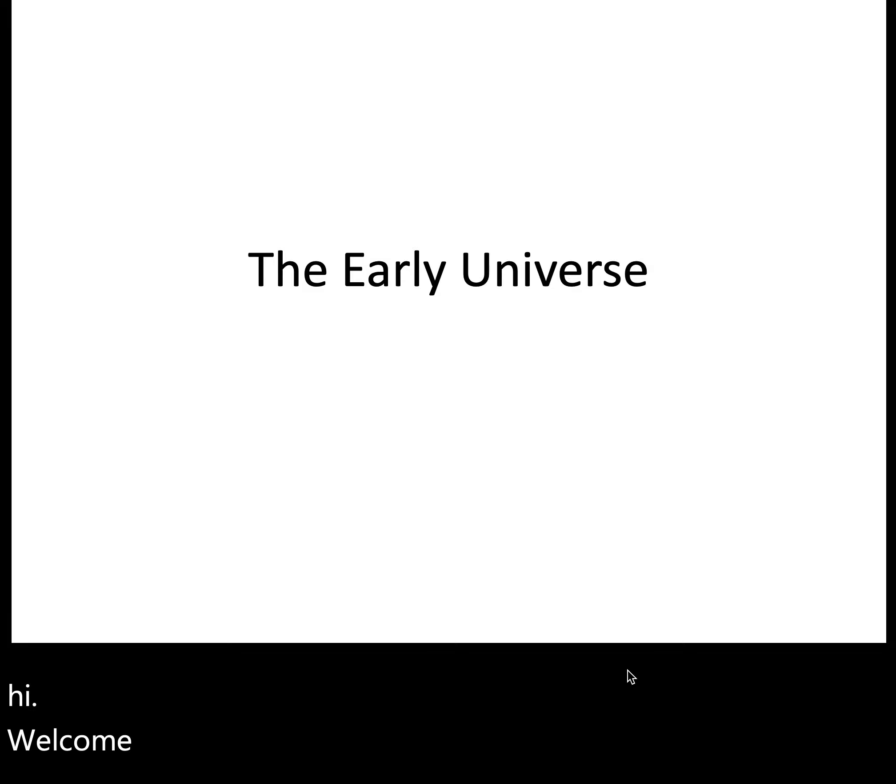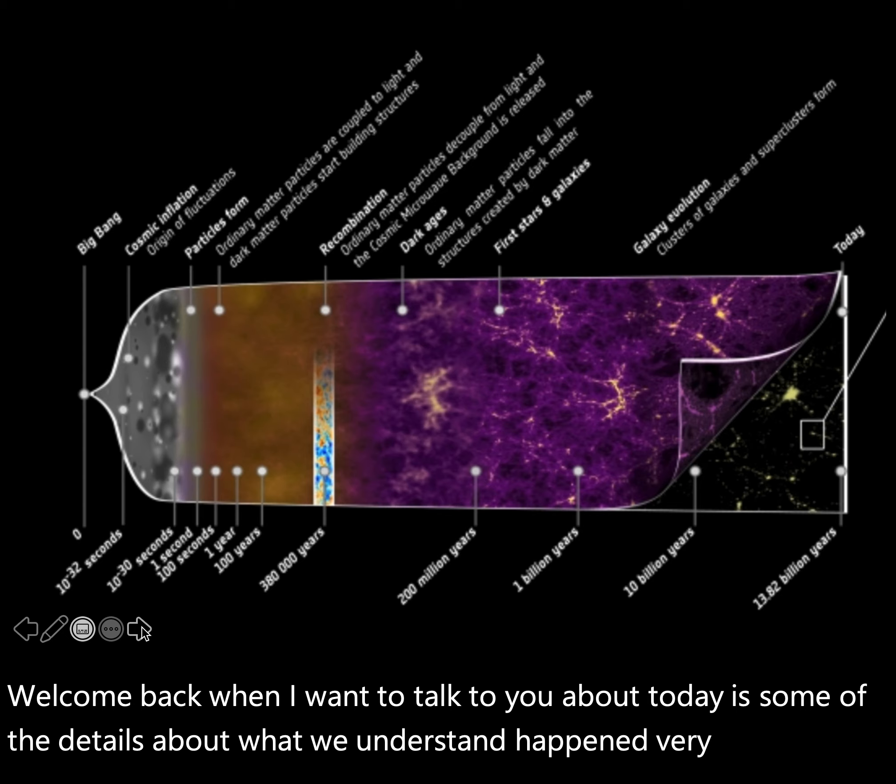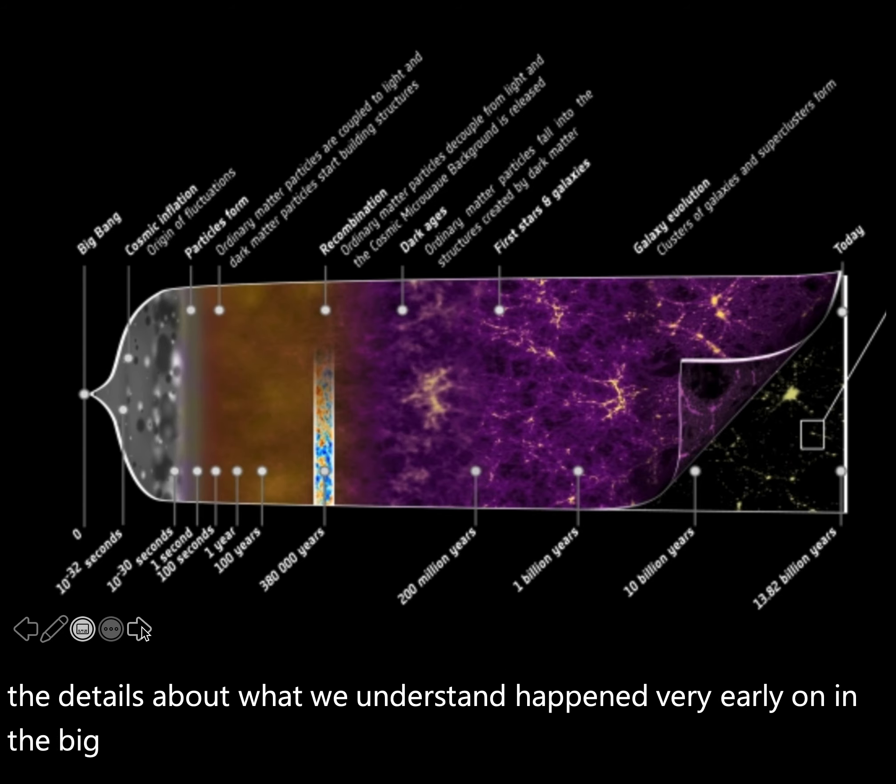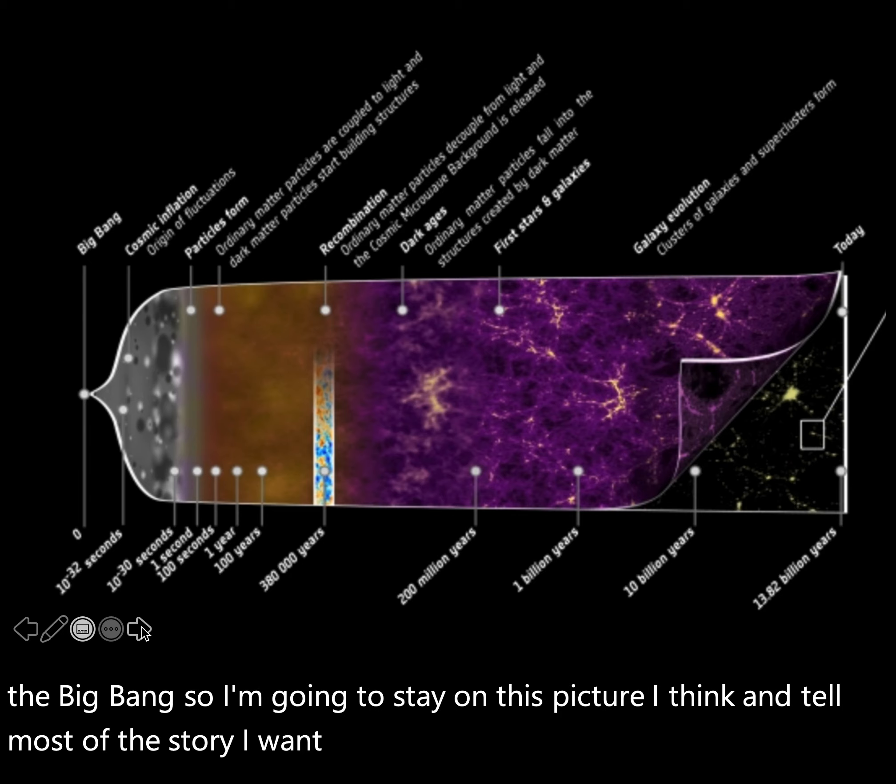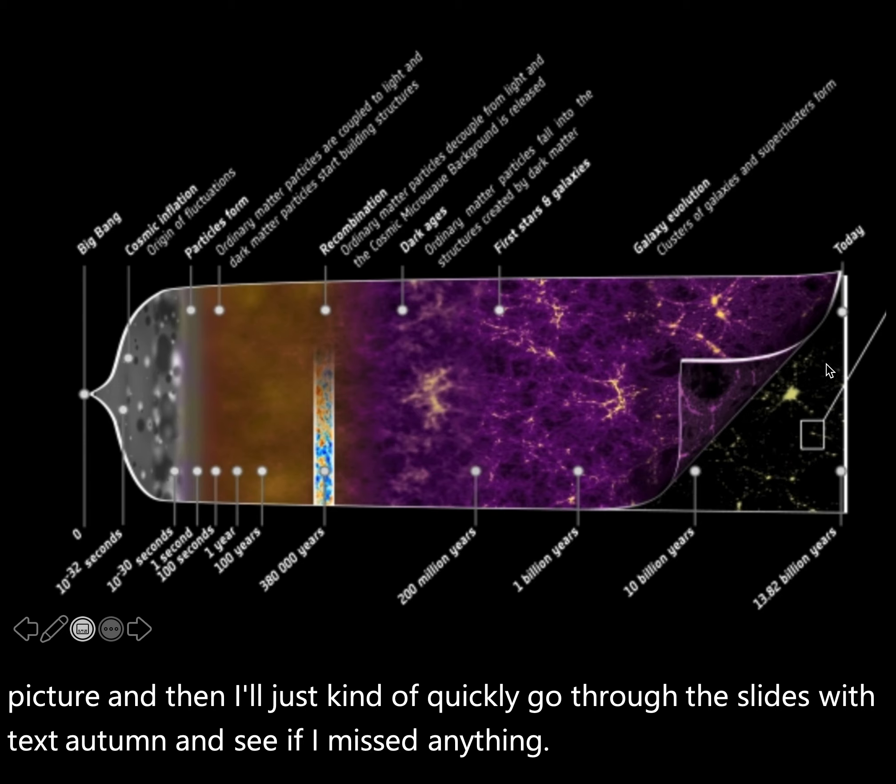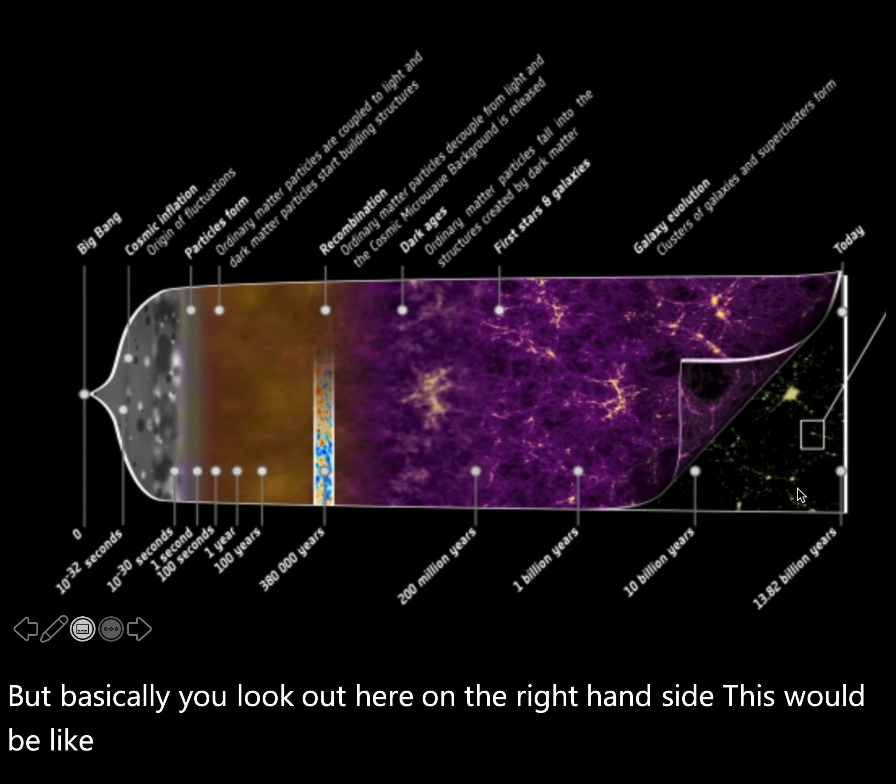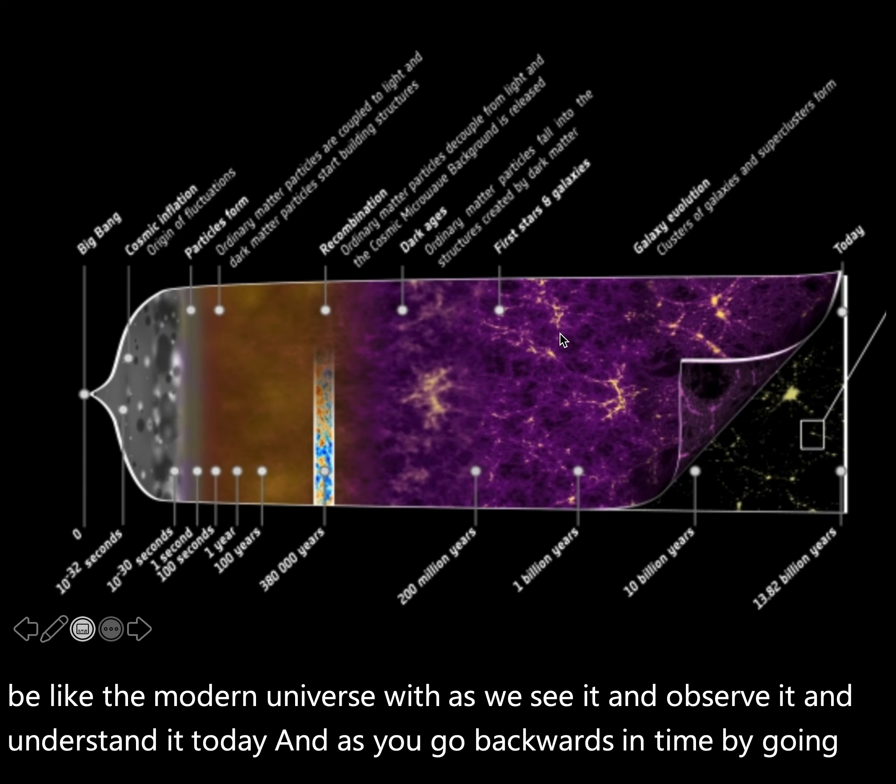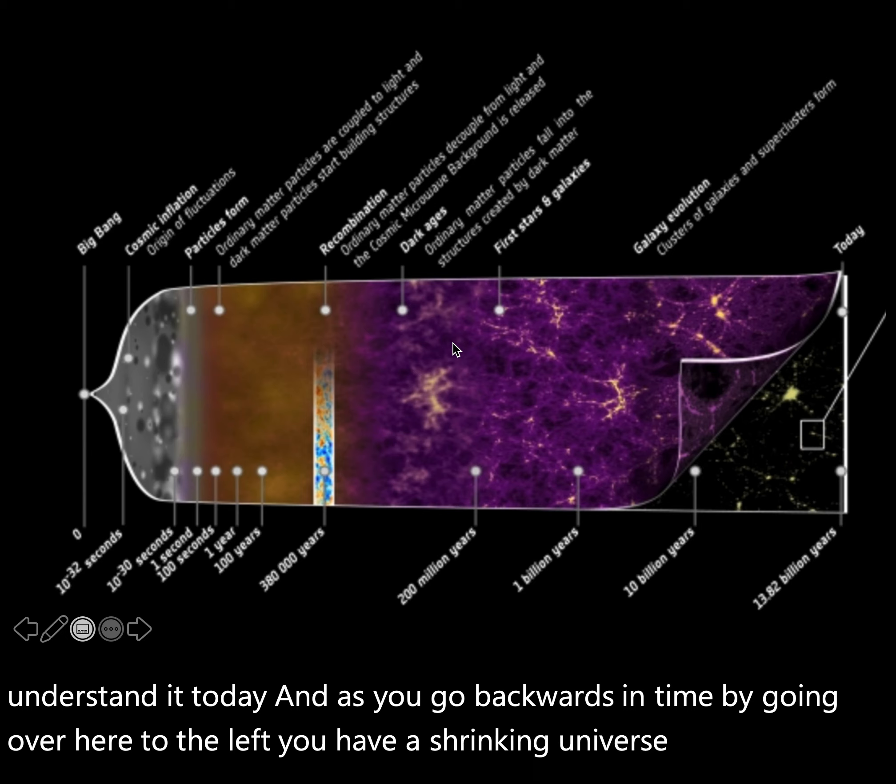Welcome back. What I want to talk to you about today is some of the details about what we understand happened very early on in the Big Bang. So I'm going to stay on this picture and tell most of the story off of this picture. And then I'll quickly go through the slides with text and see if I missed anything. Basically, you look out here on the right-hand side, and this would be the modern universe as we see it and observe it today. And as you go backwards in time by going to the left, you have a shrinking universe.